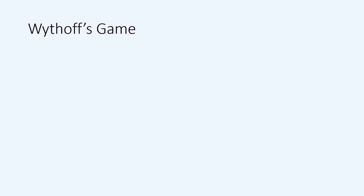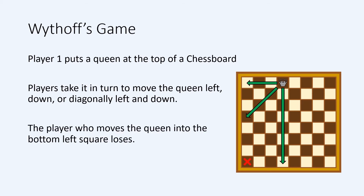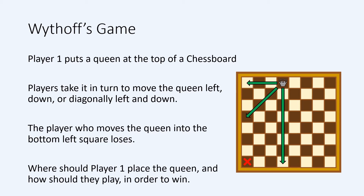Withof's game: this game is played on a standard 8x8 chess board with a single queen. The first player places the queen anywhere in the top row of the board, and then with the other player moving next, each player takes it in turns to move the queen any number of squares to the left, down, or diagonally left and down. The player who moves the queen into the bottom left square loses. In which square should the first player place the queen, and what strategy should they employ to win? Notice that it's not possible to draw either of these games, so exactly one of the players in each case must have a winning strategy.